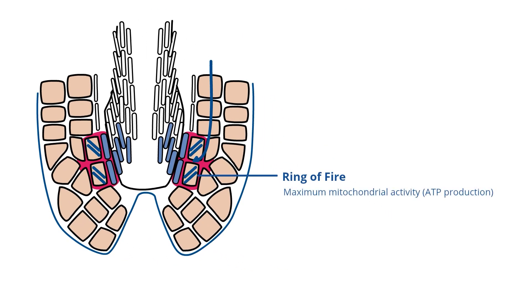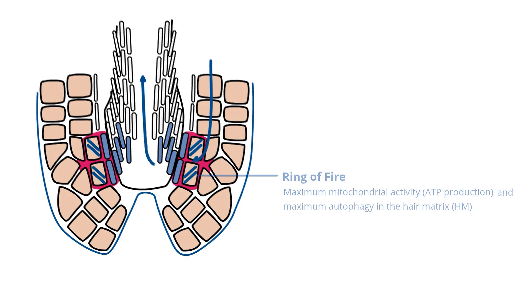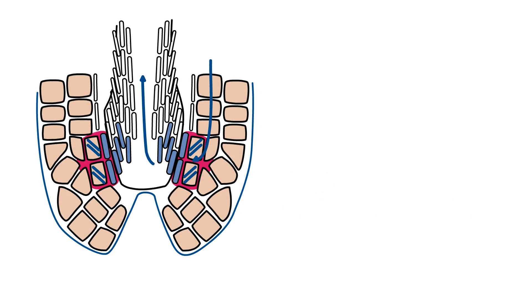In this area, the highest level of mitochondrial activity and the greatest rate of spring cleaning, so-called autophagy, is needed. Here, all cellular components are broken down, recycled, and converted into new building blocks to form beautiful hair shafts.